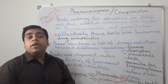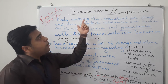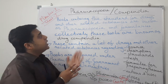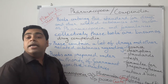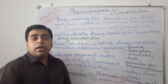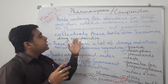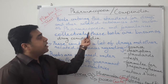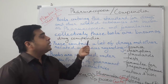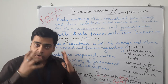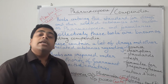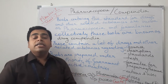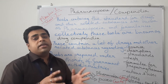Look at the spelling: pharmacopoeia — p-h-a-r-m-a-c-o-p-o-e-i-a — the spelling should be very proper. So what are these pharmacopoeias? The books containing the standards for drugs and other related substances are known as pharmacopoeia and formularies, and collectively these books are known as drug compendias. These are new terms for you. Number one is pharmacopoeia, number two is formularies, and number three is compendias. Almost each and every country in the globe has its own pharmacopoeia.